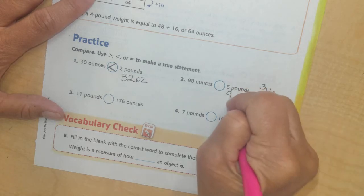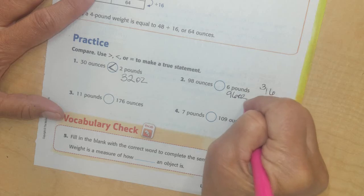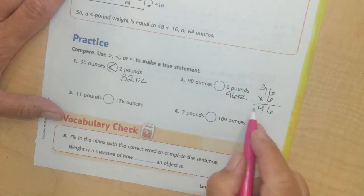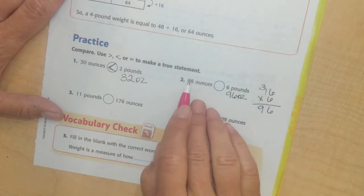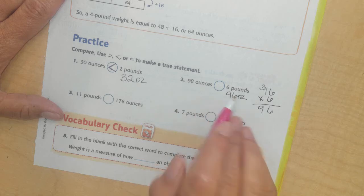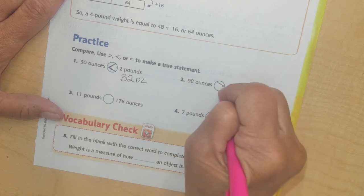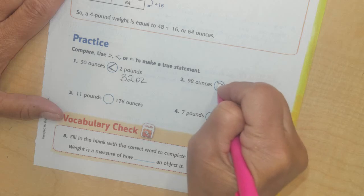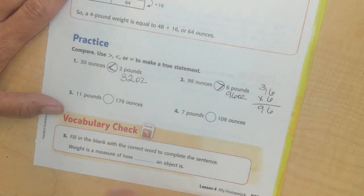And now I do 6 times 1 plus the 3. I have 96 ounces. I'm going to abbreviate ounces O-Z. 98 is bigger than 96, so now I'm going to use the greater than symbol. Greater than starts with the big and has the point on that side.